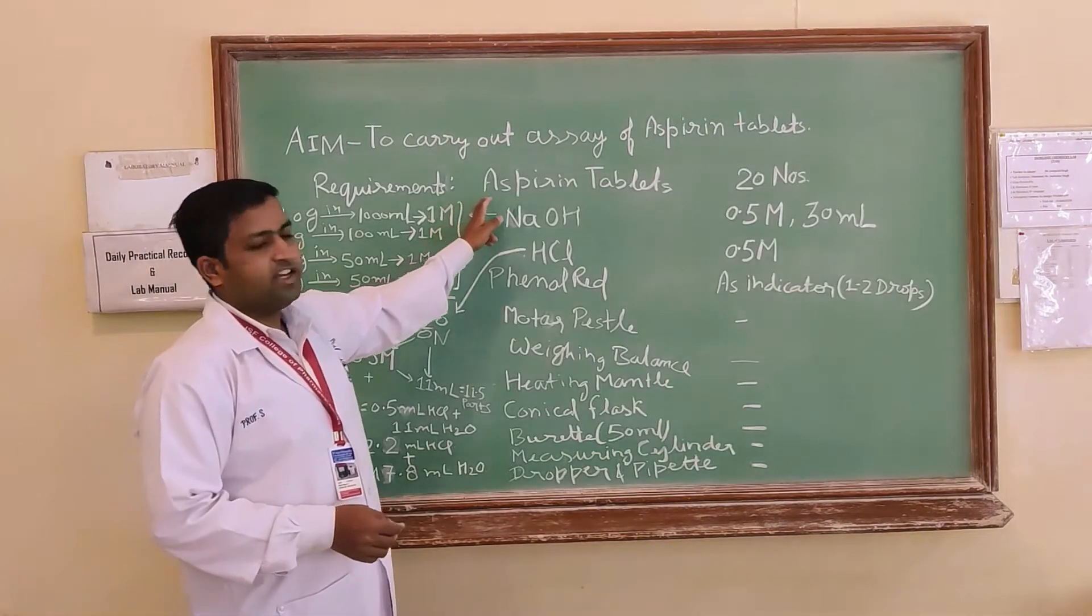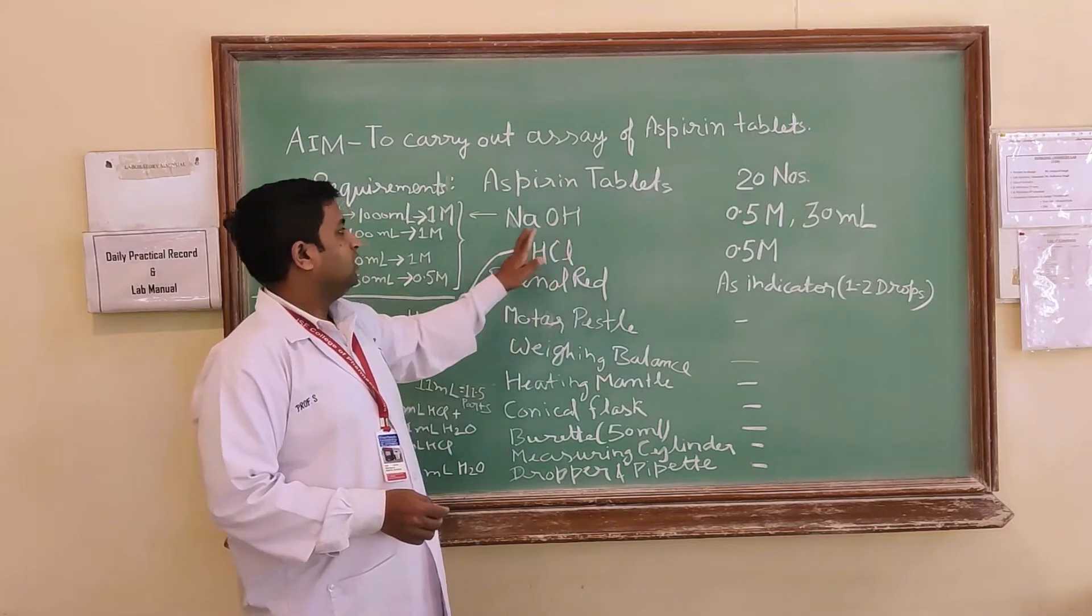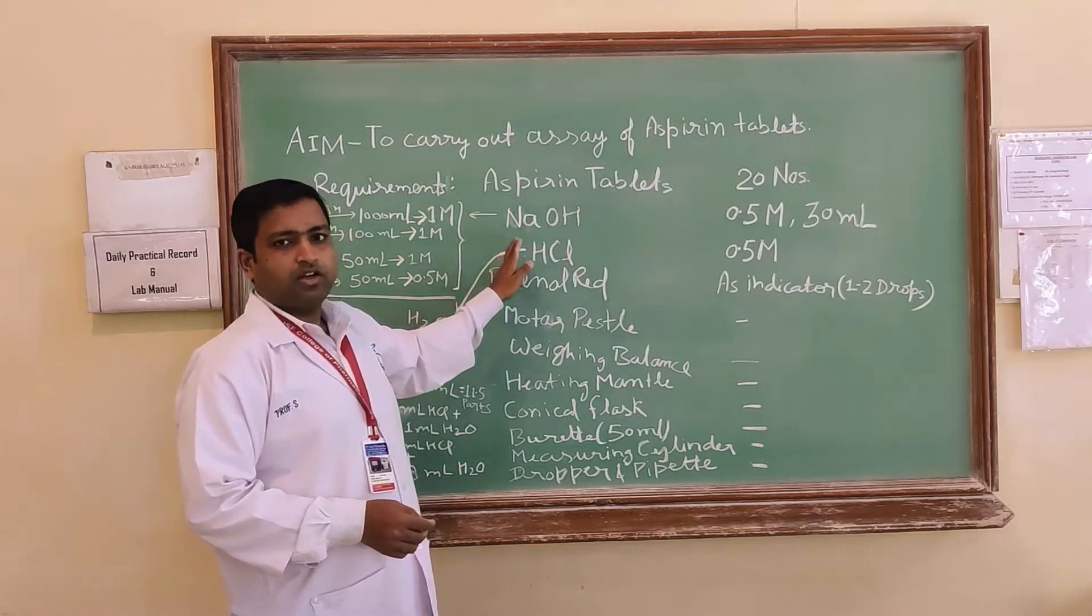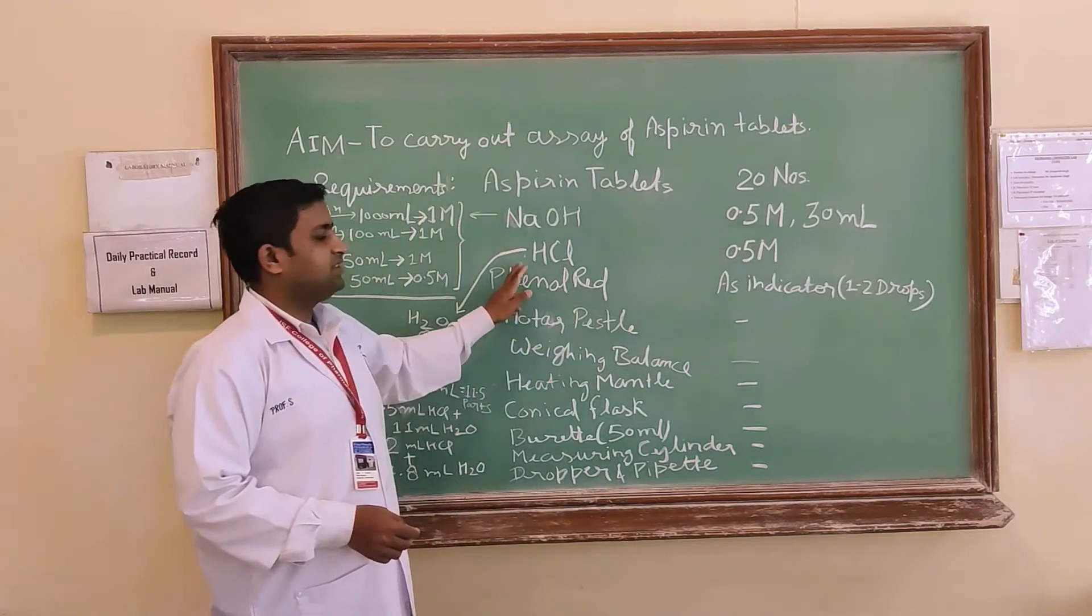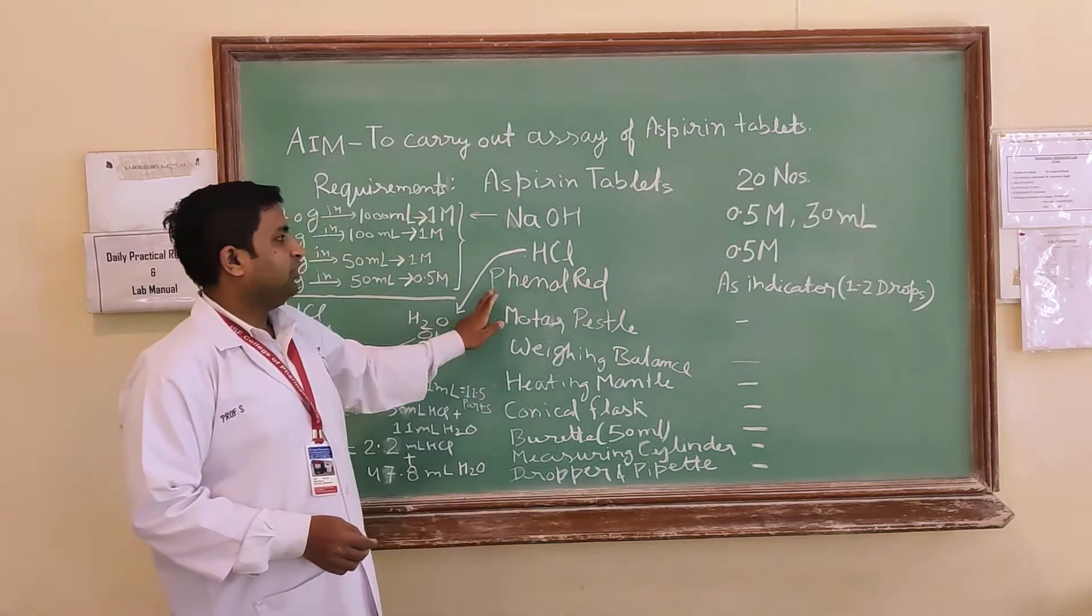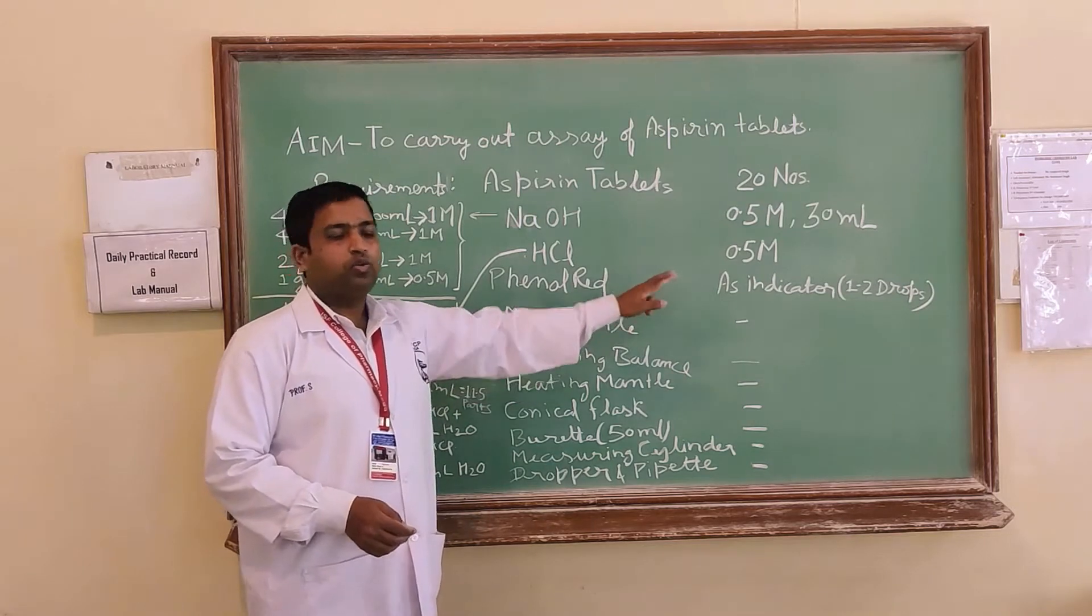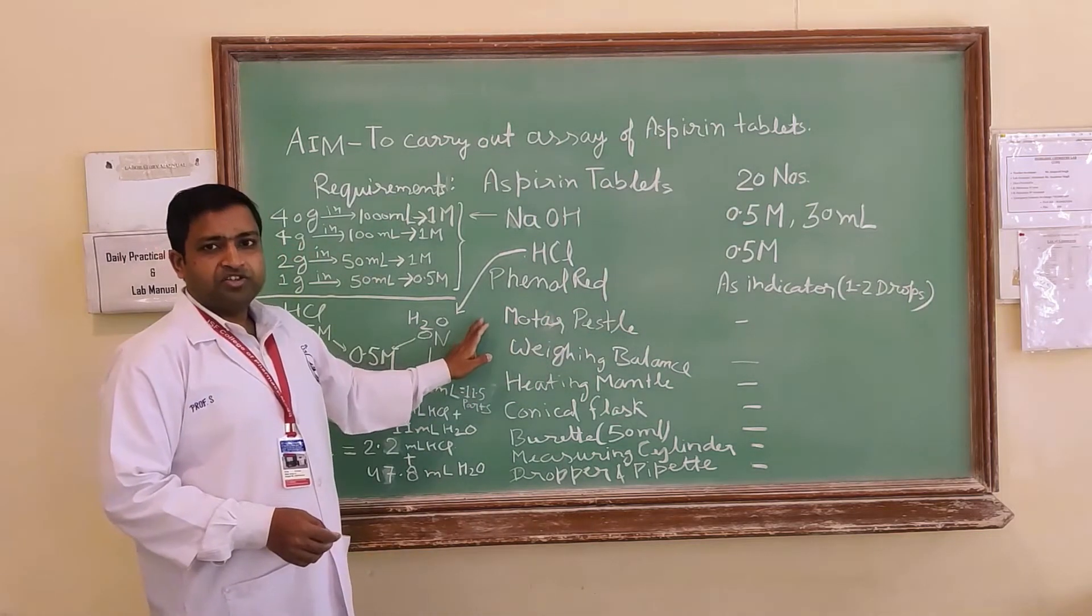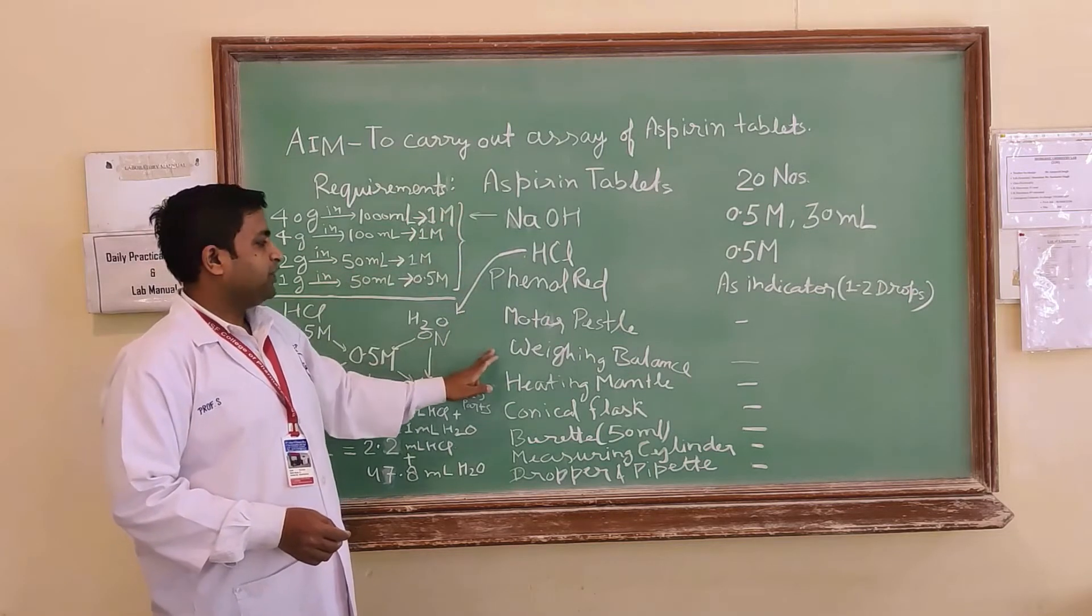You will need aspirin tablets, 20 number NaOH 0.5 molar, 30 ml HCl 0.5 molar, 50 ml phenol red as an indicator 1-2 drops, mortar and pestle, 20 powder aspirin tablet, weighing balance.